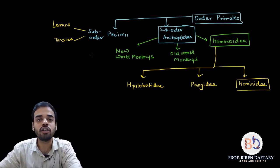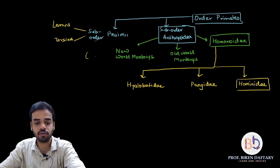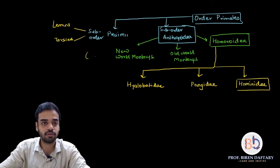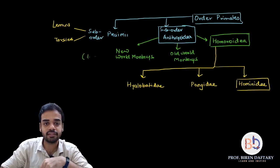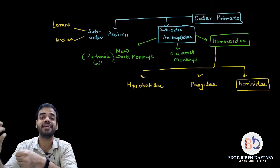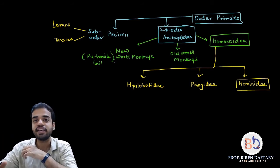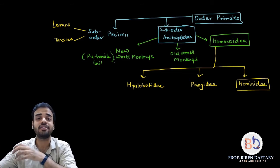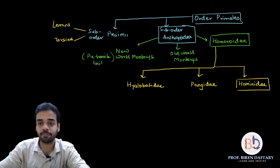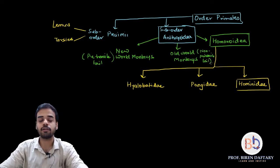New World and Old World monkeys have physical differences. New World monkeys have a prehensile tail — a highly muscular tail used for grabbing branches, almost like an extra limb — whereas Old World monkeys have a non-prehensile, shorter, weaker tail they cannot use for support.